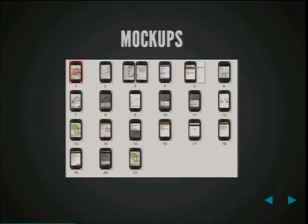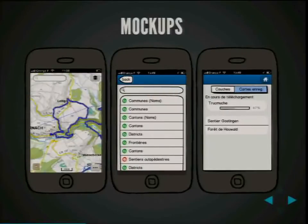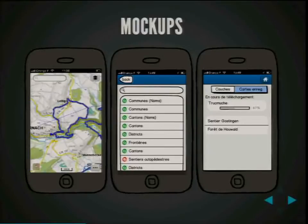First, what we did was create mockups so that we were sure we could fit all those features into a single application. It took a long time, but it was really worth it. Here we have only half of the different screens we mocked up. You can see that you have the map view first, then layer and overlay layer selection with a search field because we have a lot of layers. The last one shows how we imagined the offline download.